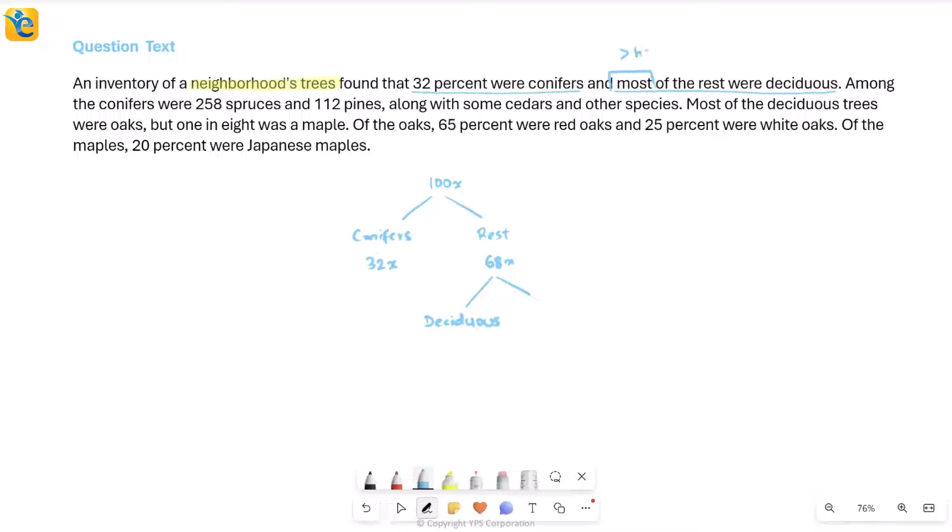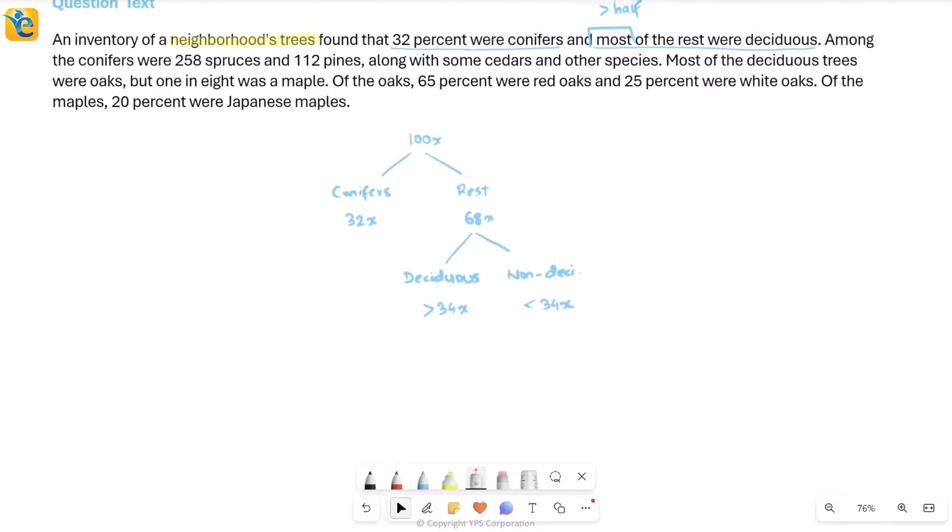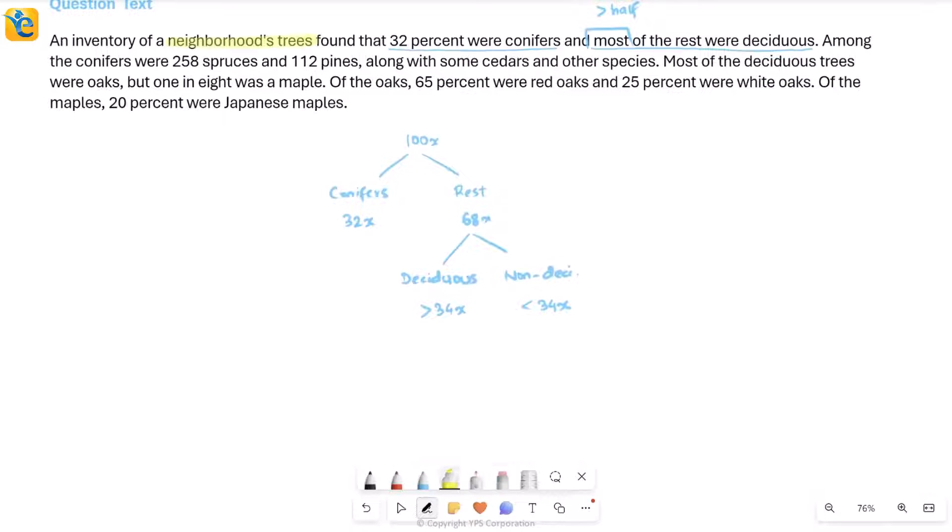If I think about all of these 68X, then half would mean 34X. And so when I say more than half, I'm definitely saying that it's more than 34X. And therefore, all of the others, the ones that are not deciduous, they have to be less than 34X because the total is 68. This way, we've understood the first entire sentence. Let's read further.